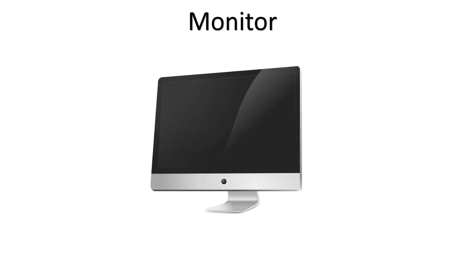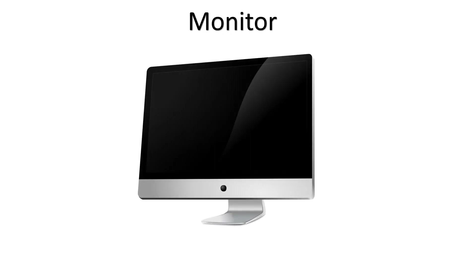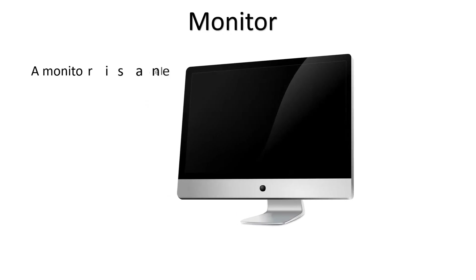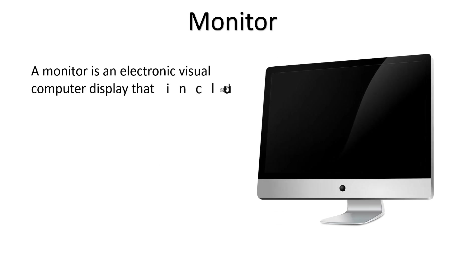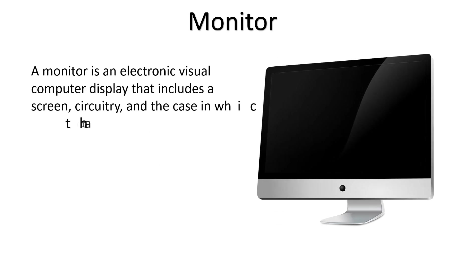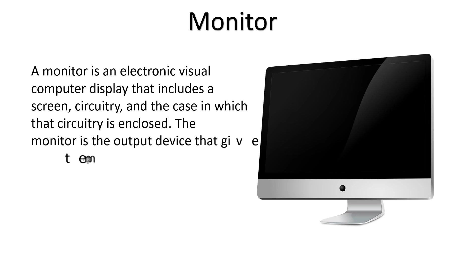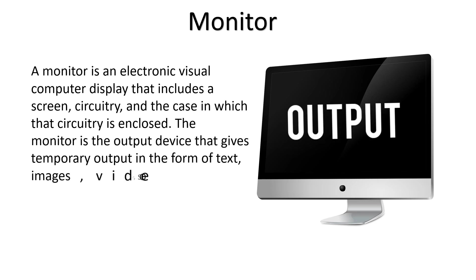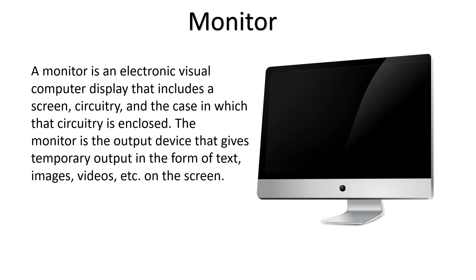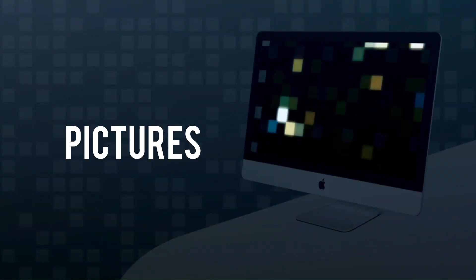The monitor is another important hardware of the computer system. A monitor is an electronic visual display that includes a screen, circuitry, and the case enclosing that circuitry. It is an output device that displays the information resulting from processing. We can see the output on the monitor screen in the form of text, pictures, videos, and so on.